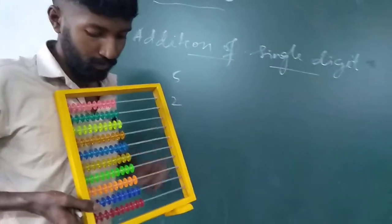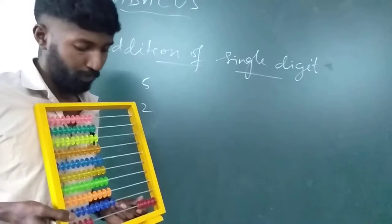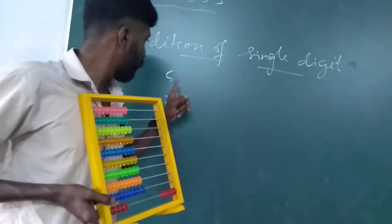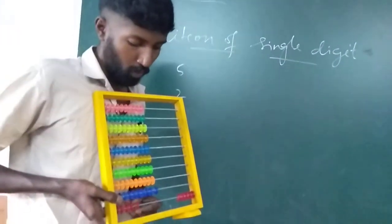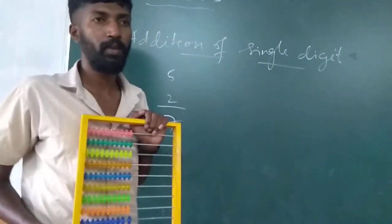First, we are going to add 5. So, 1, 2, 3, 4, 5. Now, this is 5. We are going to add 2 with 5. So, 1, 2. Now, total this is 7.